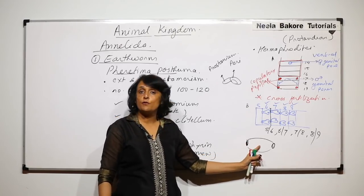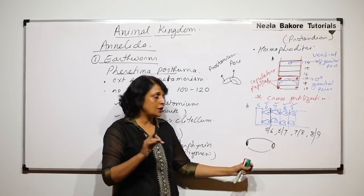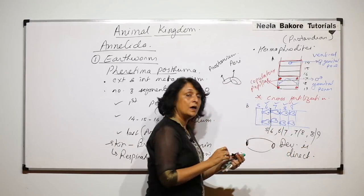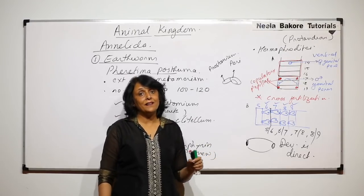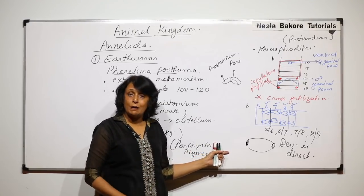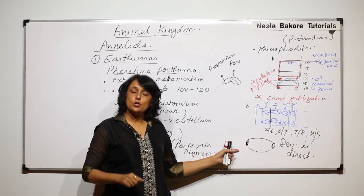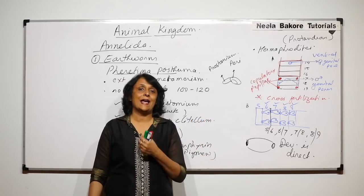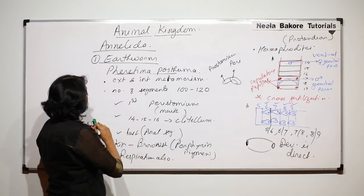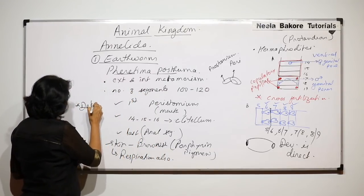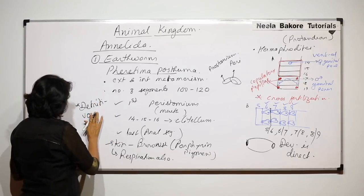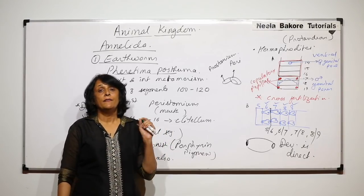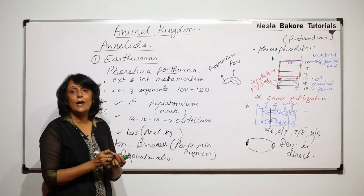The clitellum then comes out and closes from both ends, forming the ootheca or cocoon. Fertilization takes place inside, and baby earthworms emerge from this structure. There is no larval stage — development is direct. Earthworms are very useful in agriculture and are considered friends of farmers because they live in soil, make burrows, and feed on decomposing organic matter.